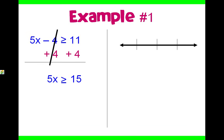And 11 plus four is 15. Now we are at a one-step inequality. We have to get rid of that 5. To get rid of 5, you're multiplying it, so you would divide by 5. What you do to one side, you do to the other.